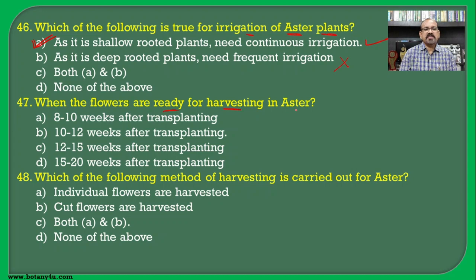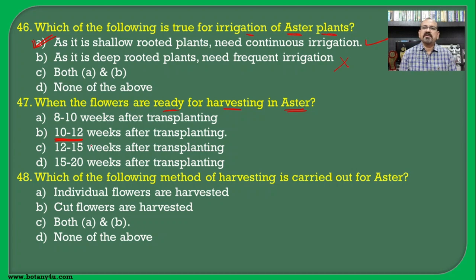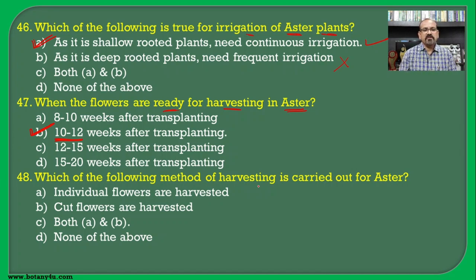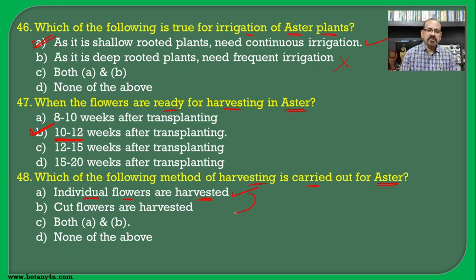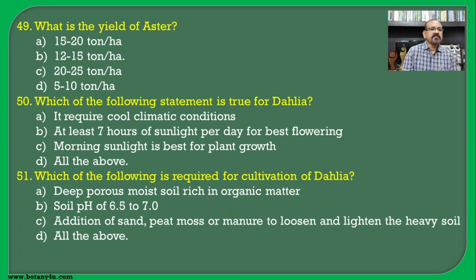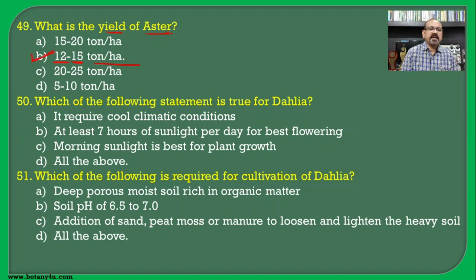When are flowers ready for harvesting in aster? Harvesting of aster is carried out 10 to 12 weeks after transplanting so that flowers bloom well — B is the correct answer. For harvesting method: individual flowers are harvested, which is the common practice, but cut flowers are also harvested in aster varieties — both A and B are correct. The yield of aster is 12 to 15 tonnes per hectare, so B is the correct answer.